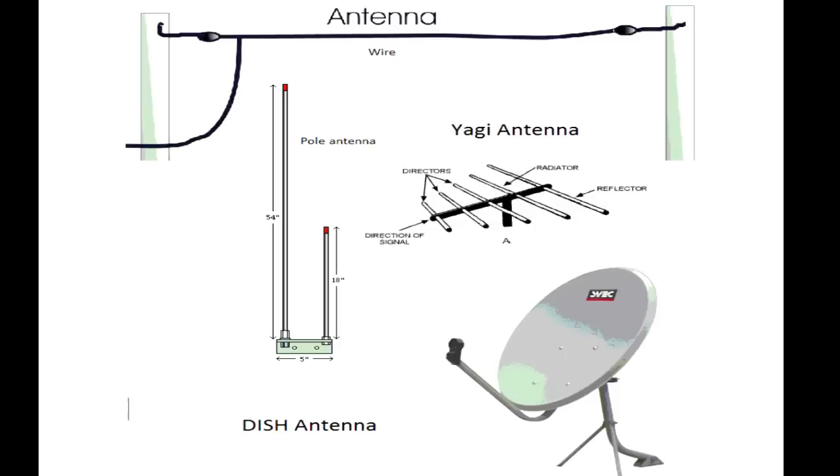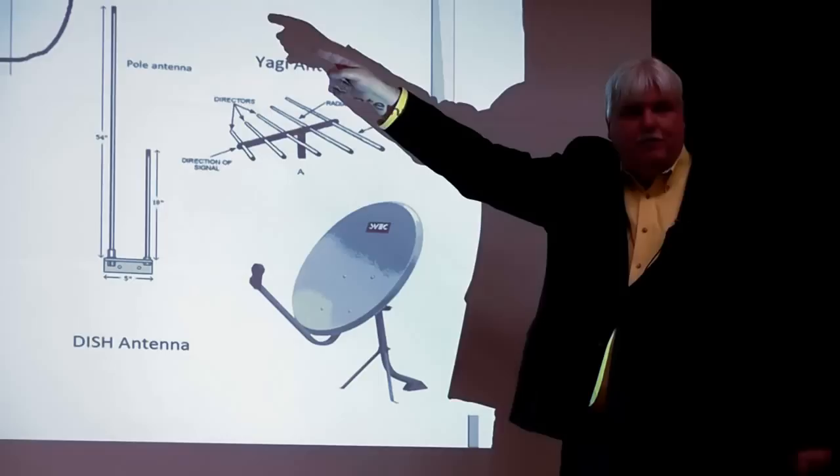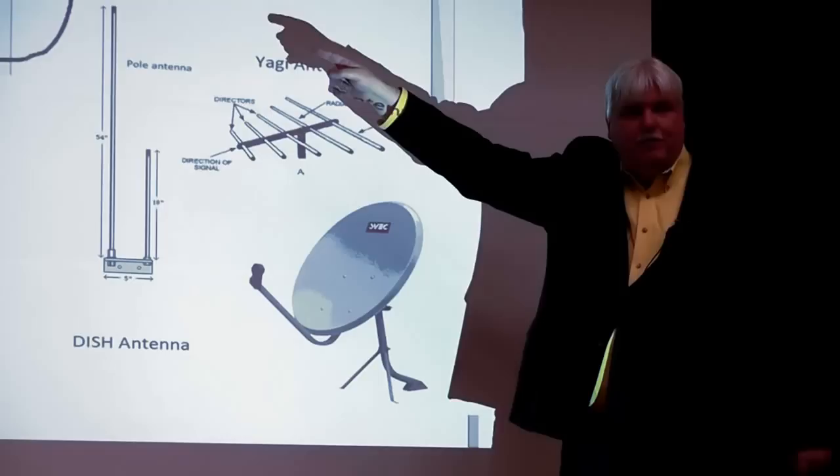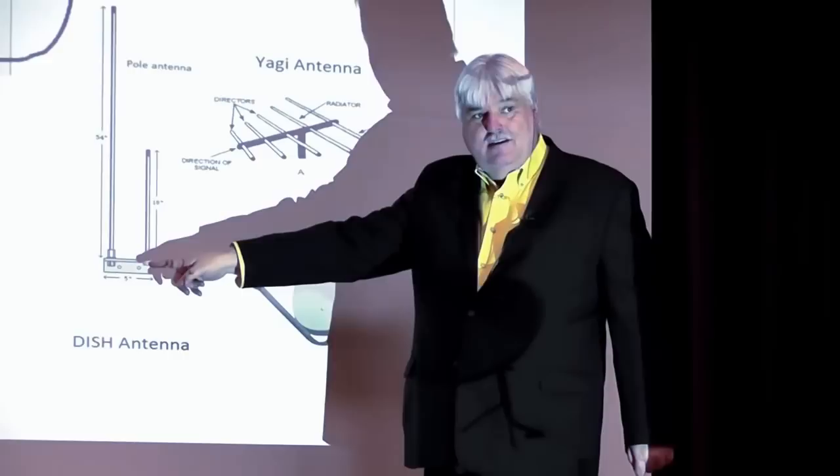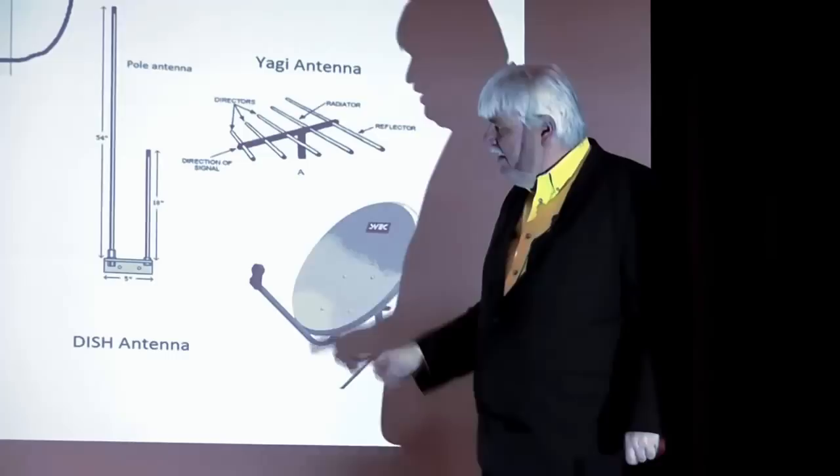The earliest antennas were just a real long wire—the longer the wire, the more signal you'd pick up. Early AM radio just strung a wire between two trees or poles. Here is an example of a vertically polarized antenna. Here's an example of a horizontally polarized jogging antenna.